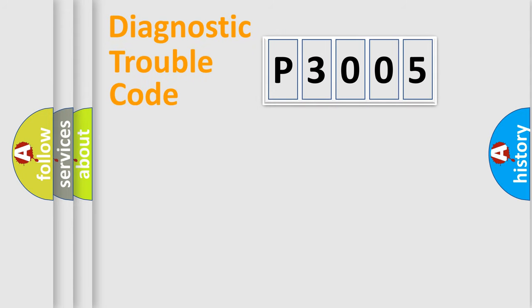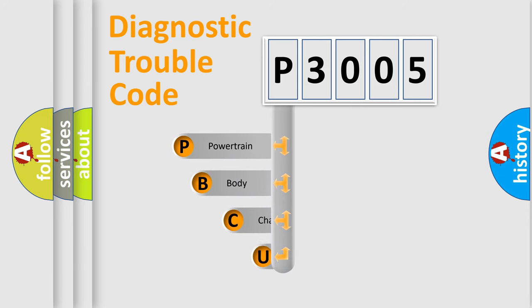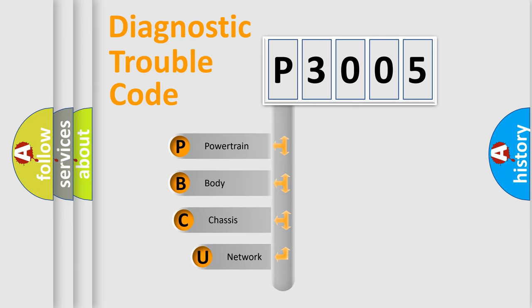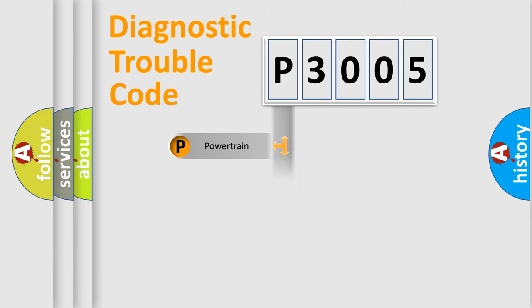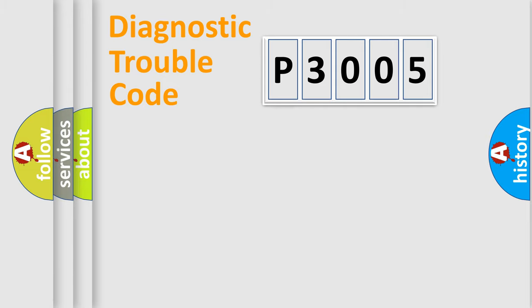Let's do this. First, let's look at the history of diagnostic fault code composition according to the OBD2 protocol, which is unified for all automakers since 2000. We divide the electric system of the automobile into four basic units: Powertrain, body, chassis, and network.